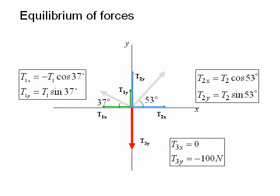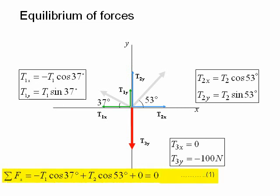From the condition for equilibrium, the sum of all the x components must be equal to zero. So the sum of Fx is equal to minus T1 cos 37 degrees plus T2 cos 53 degrees plus zero, which equals zero. That's equation 1.